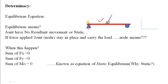If the structure is in equilibrium — meaning it does not move — then every joint of the structure is also in equilibrium. To satisfy this equilibrium condition, you have to satisfy certain equations known as static equilibrium equations. If this joint is in equilibrium, it means it does not move in the x-direction, y-direction, or rotate.